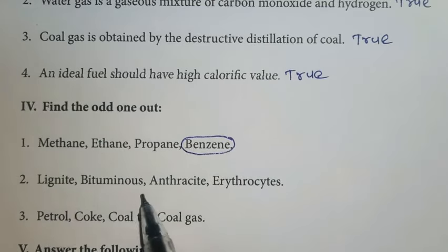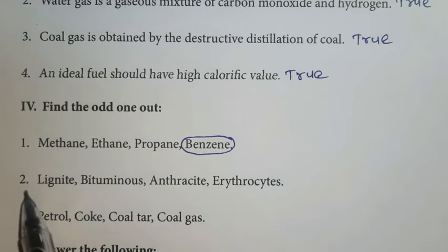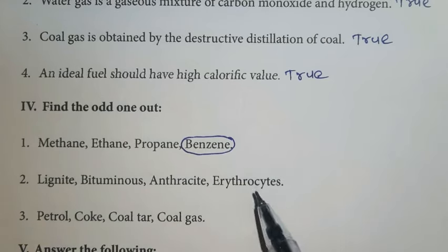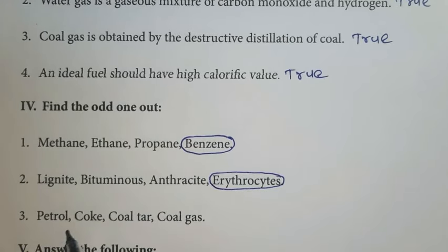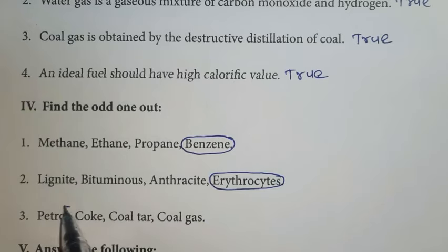Second one — lignite, bituminous, anthracite, erythrocyte. The first three are types of coal. Erythrocytes belong to blood cells. So the different one is erythrocytes. Third one — petrol, coke, coal, coal gas. Coke, coal, and coal gas are all products of coal, but petrol is the odd one out.